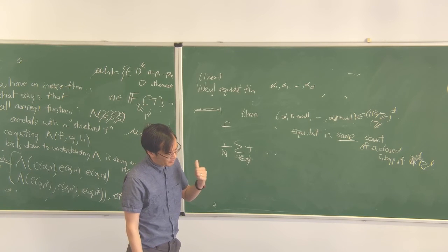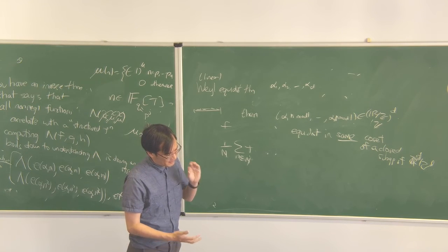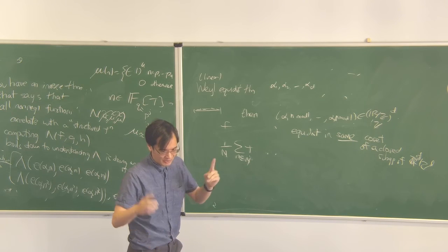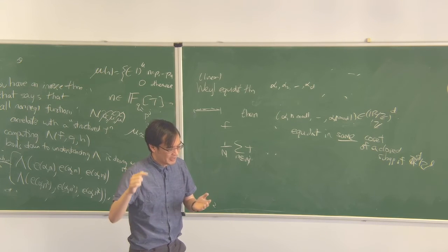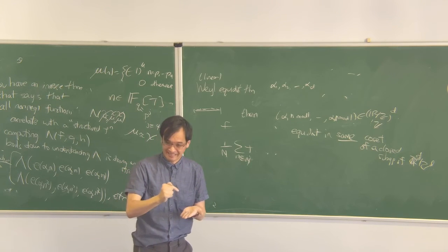The other thing that helped with the polymath project was that there was this very visible measure of progress, which is this upper bound of prime gaps. And it was a decreasing sequence of natural numbers, so it had to terminate.